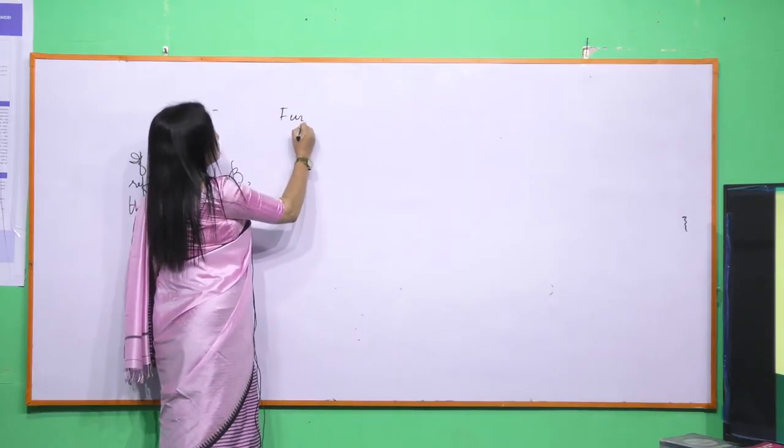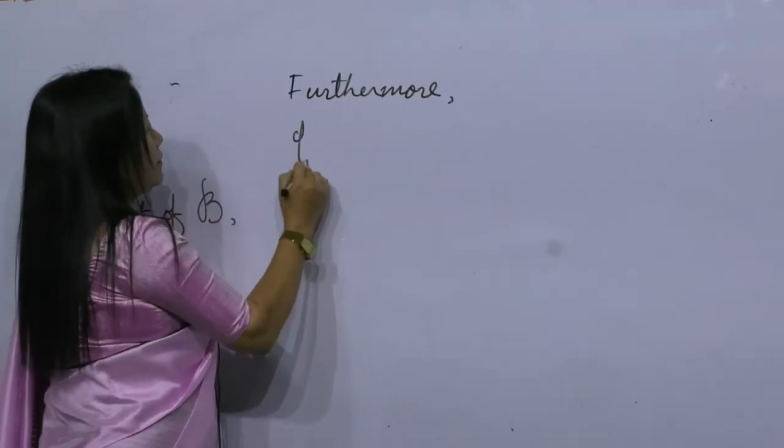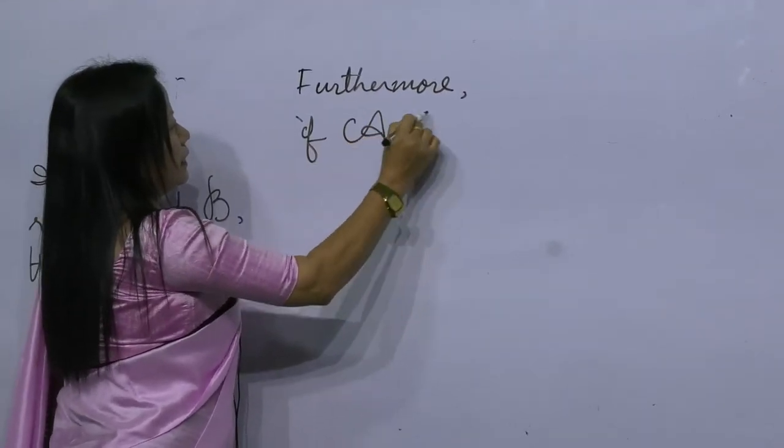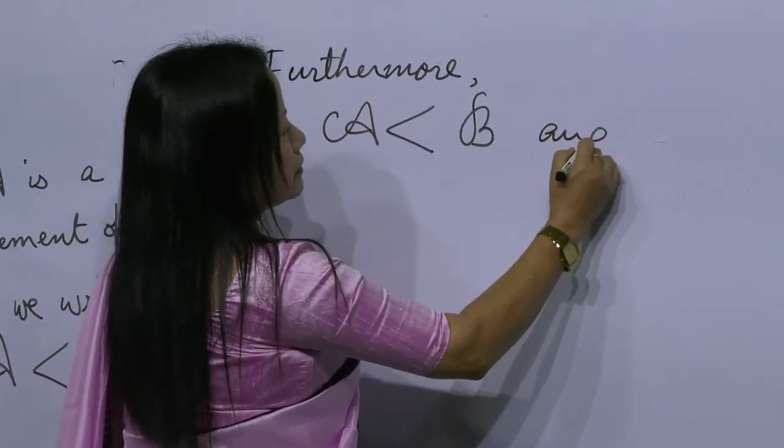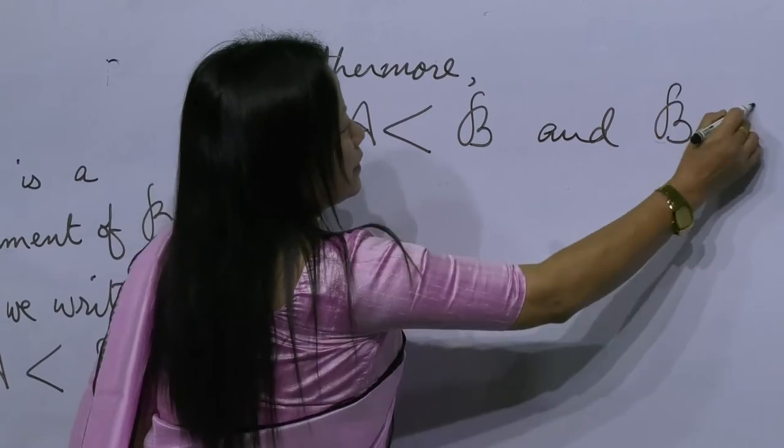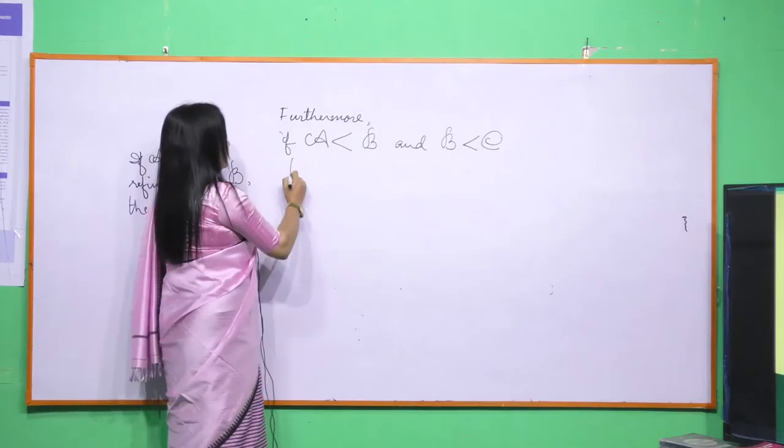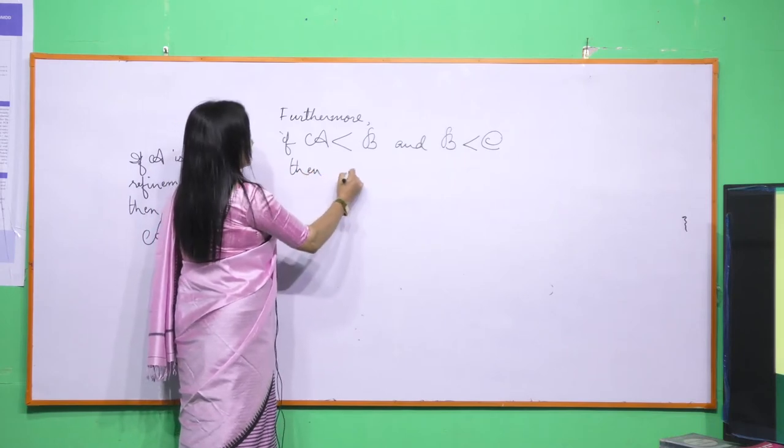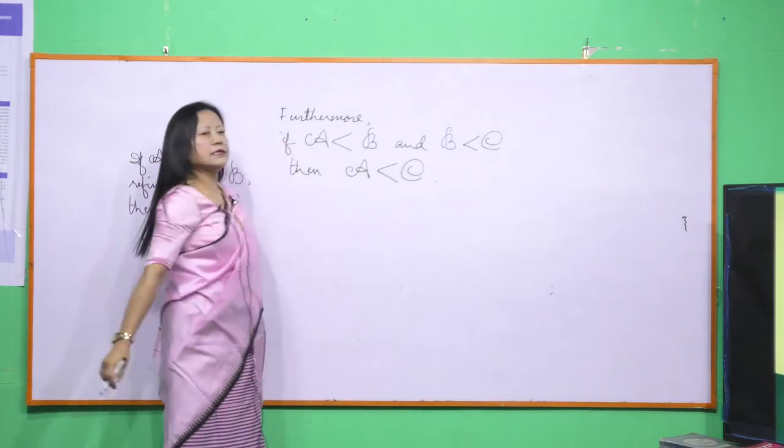Furthermore, if A is a Refinement of B and B is a Refinement of C, then it follows that A is also a Refinement of C.